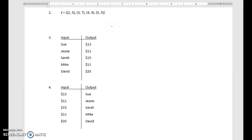Looking at this one right here, you can see that the input is Sue, Jesse, Sarah, Mike, and David. Since these inputs don't repeat themselves, we know that no matter what is on the output, we're going to indicate that this is a function. Since this is a function, we're going to indicate yes.